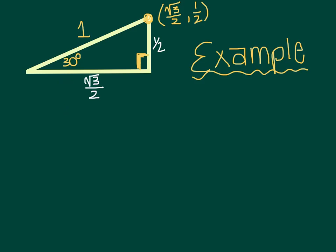So we'll do a specific example of 30 degrees. We know that the sine of 30 is going to equal 1 half, because that is our y value.